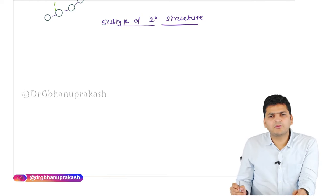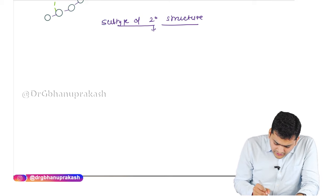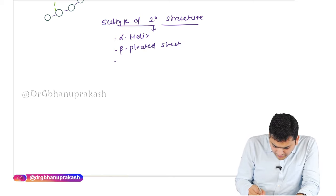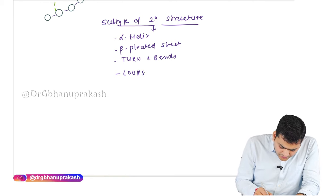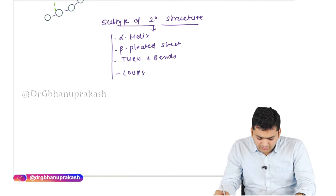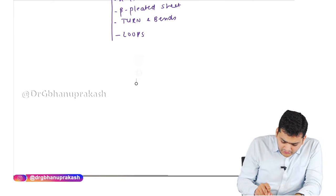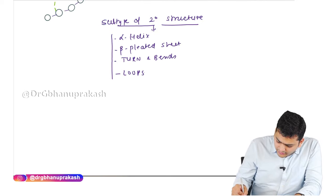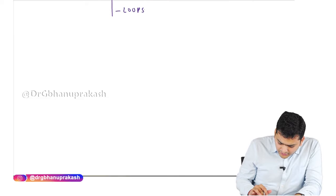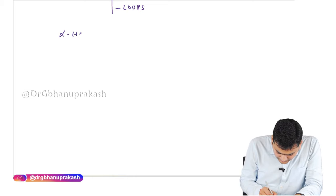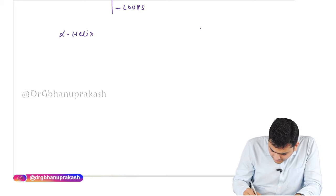The subtypes of secondary structure are: alpha helix, beta pleated sheet, turn and bends, and loops. Let's discuss them one by one. We'll make a differentiating table between alpha helix and beta pleated sheet.